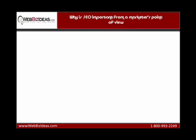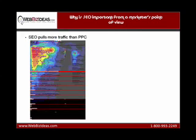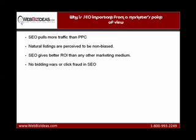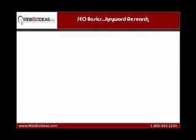Why is search engine optimization important from a marketer's point of view? For one, search engine optimization pulls more traffic than pay-per-click. Many eye-tracking surveys, like the one shown, reveal 80% of internet users click on the first three listings of Google. Other reasons are natural listings are perceived to be non-biased. SEO gives better return on your investment than any other marketing medium. There are no bidding wars or click fraud in SEO, and SEO helps in creating an online brand.